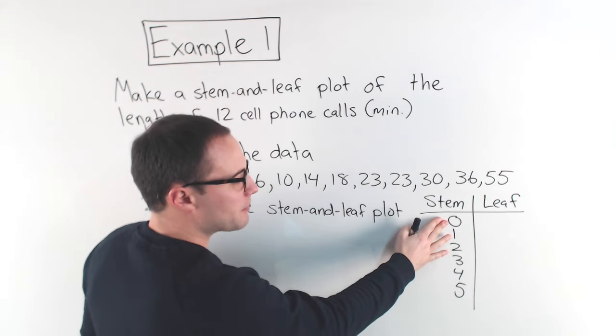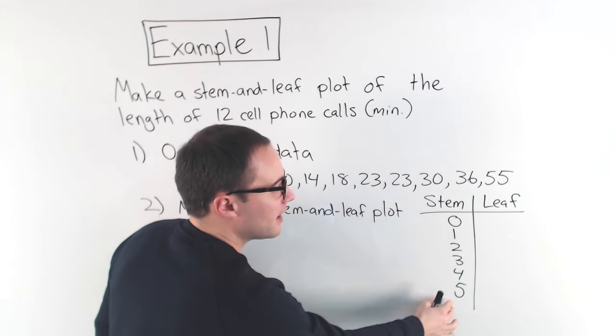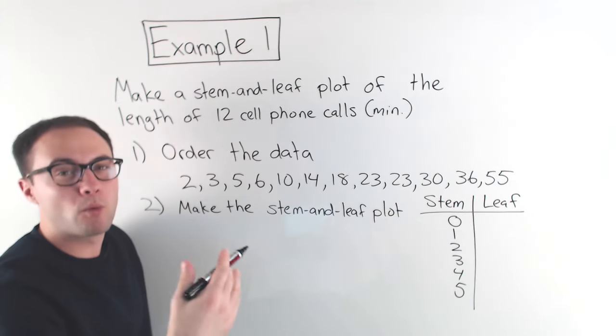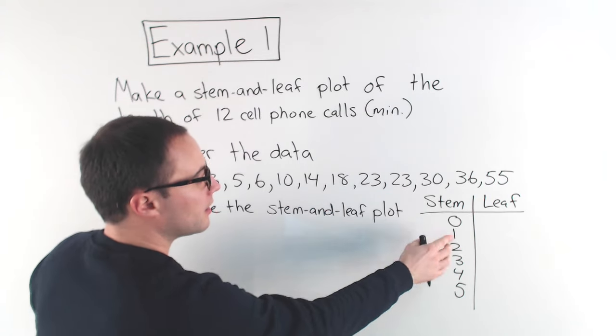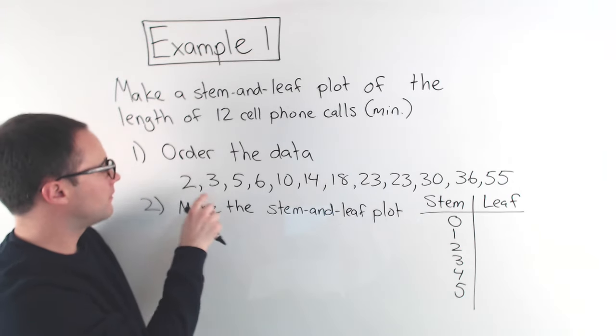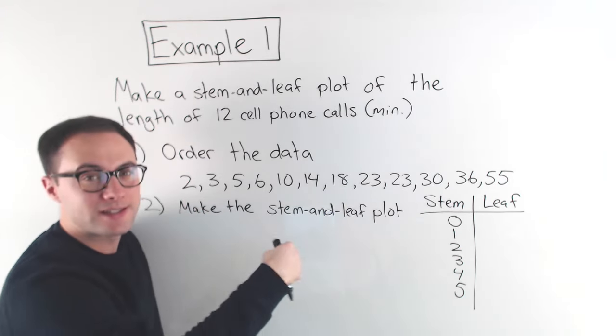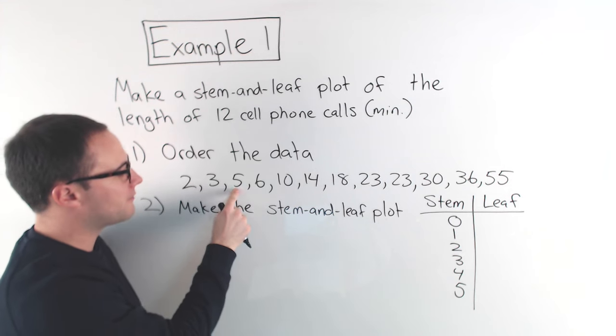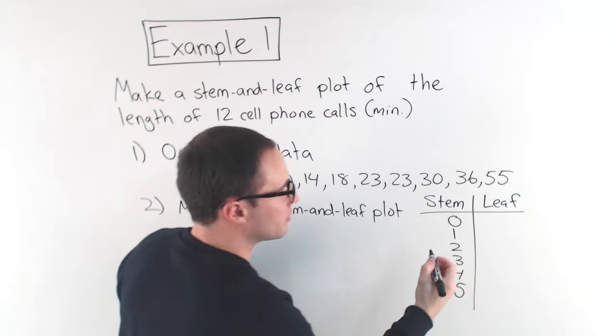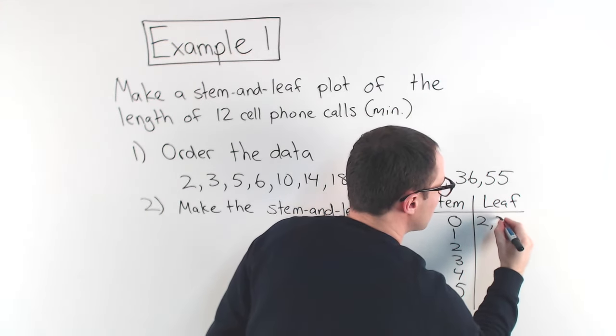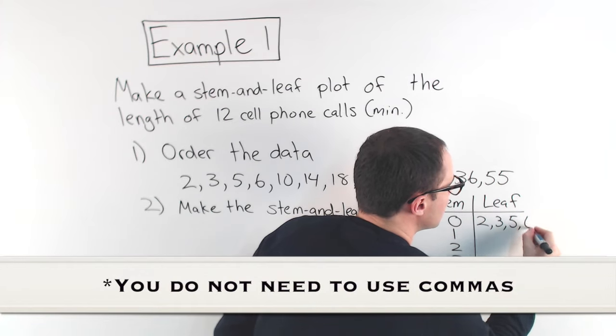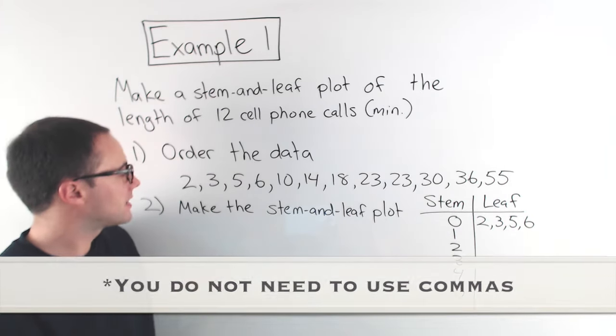So, that's my stem. Now, this represents the tens place here. The leaf is representing my ones place, so look at your values. For the values that have a zero in the tens place, I have a 2, 3, 5, and 6. So, we put those in order here: 2, 3, 5, 6. Just like that.